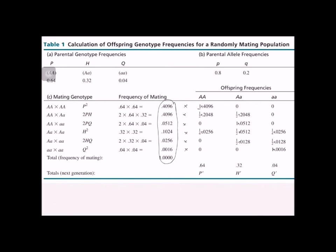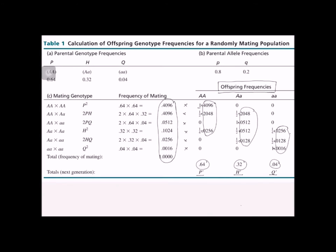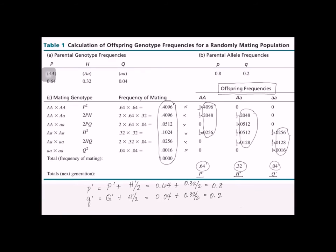The offspring frequencies with the same genotype can be added together to get genotype frequencies. These genotype frequencies, represented by P', H', and Q', can be used to calculate the allele frequencies of the offspring — lowercase p' and lowercase q'. Lowercase p' is calculated as 0.8 and lowercase q' as 0.2. Upon careful observation, the allele frequencies of the offspring — 0.8 and 0.2 — are exactly the same as the parental allele frequencies. Also, the offspring's genotype frequencies are identical to the parental genotype frequencies, thus proving the Hardy-Weinberg law.